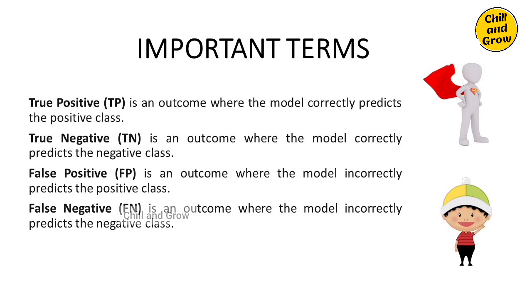In machine learning terms: True Positive means the model is correct on a positive class. True Negative means the model is correct on a negative class. False Positive means the model incorrectly predicts the positive class. False Negative means the model incorrectly predicts the negative class.